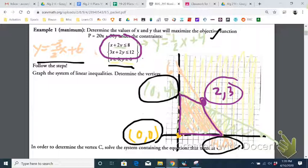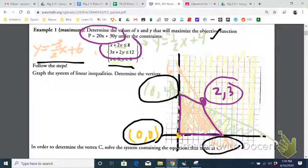Step 1, find the objective function. That's given to us right here. Step 2, graph the inequalities. We did that. And then step 3, find the vertices. Step 4 is find which vertices maximize the objective function.